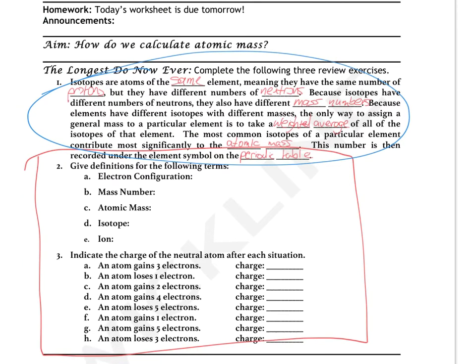Okay, so here are my answers. I'll read it out loud for you. It says that isotopes are atoms of the same element, meaning they have the same number of protons, but they have different numbers of neutrons.